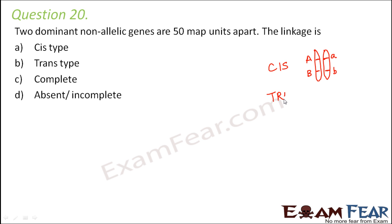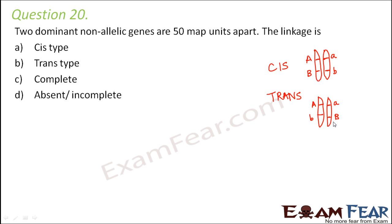When you talk about trans type, what happens is: on one chromosome you have one dominant allele and one recessive allele, and on the other chromosome you again have one dominant allele and one recessive allele. That's trans type.